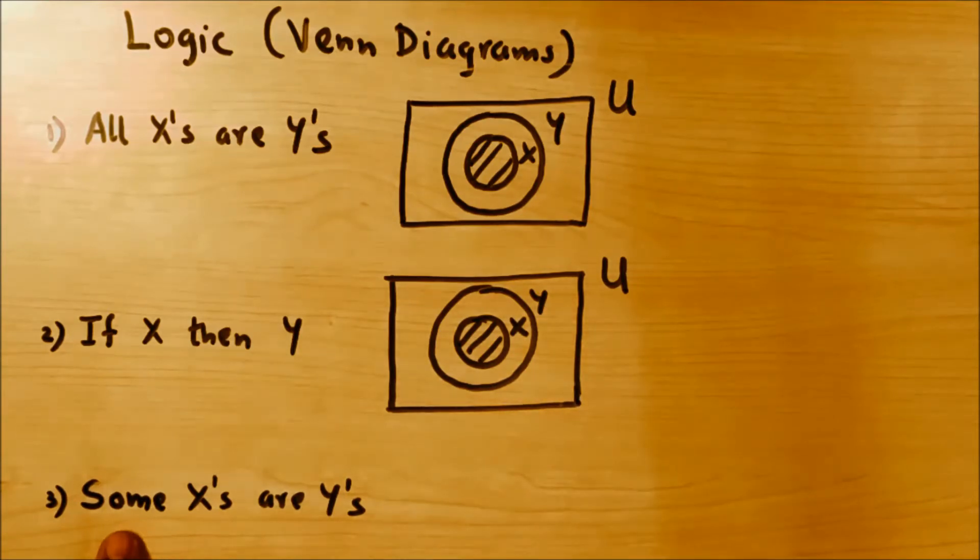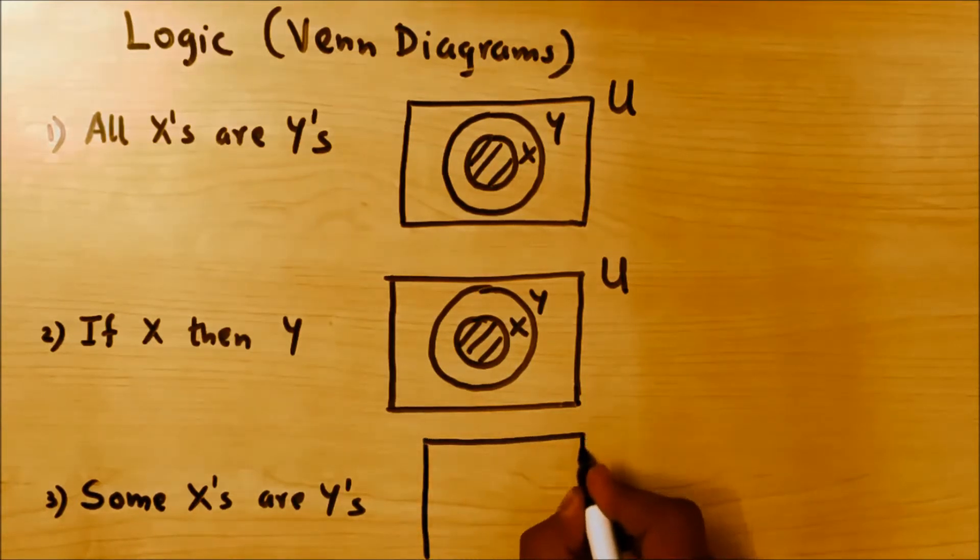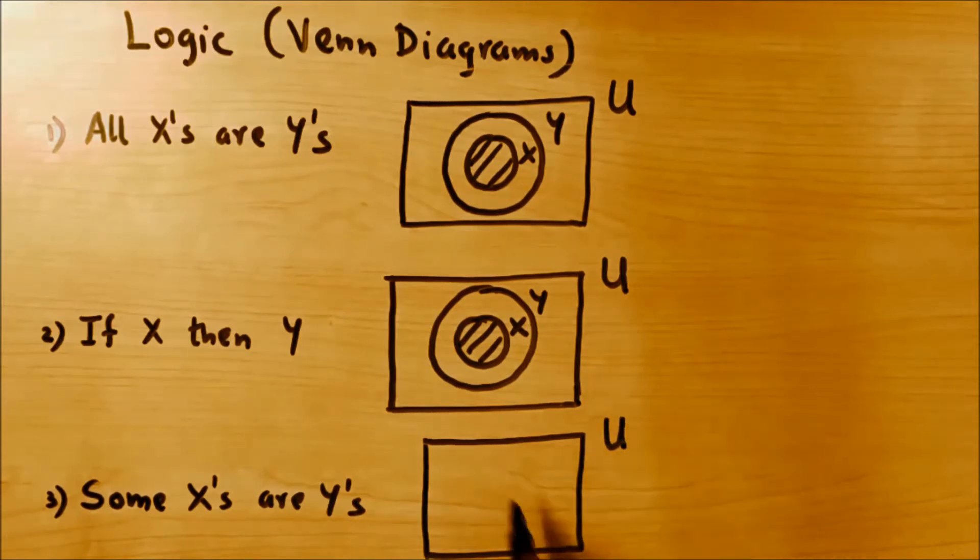Next is some X's or few X's are Y's. Whenever you have 'some', it leads to intersection. Again you have the universal set U, then you draw the set X, you draw the set Y, and some of the X's belong to Y.